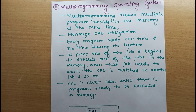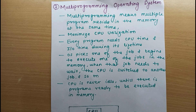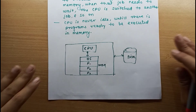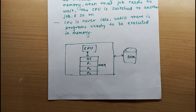But if there is no other job available — the first job is doing IO, the second job is also doing IO or waiting for IO, and there are no other programs in main memory — then nothing can be done. Just like a doctor has no patients to see, the CPU will be idle at that time.